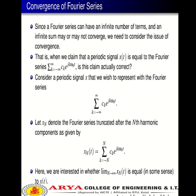Convergence of Fourier series: Since a Fourier series can have an infinite number of terms, an infinite sum may or may not converge, so we need to consider the issue of convergence. That is, when we claim that a periodic signal X(t) equals the Fourier series Σ(k=−∞ to +∞) Cₖ e^(jkω₀t), is this claim actually correct?